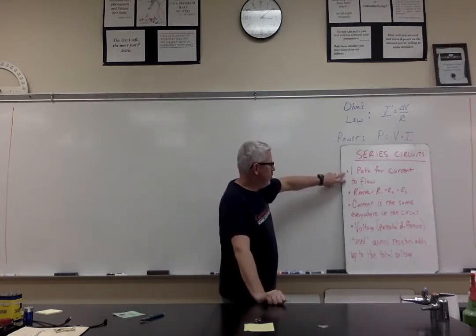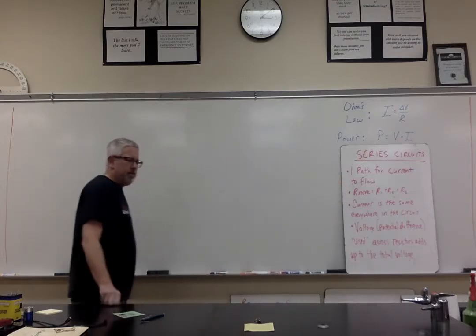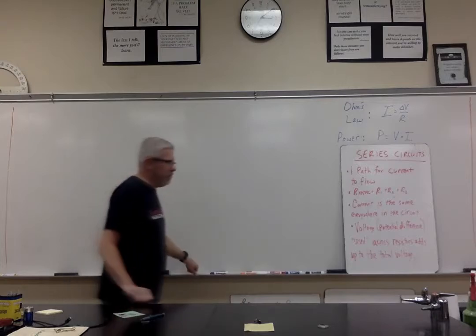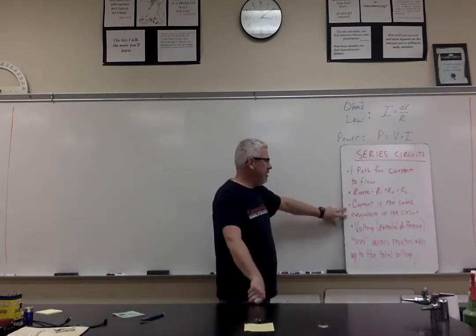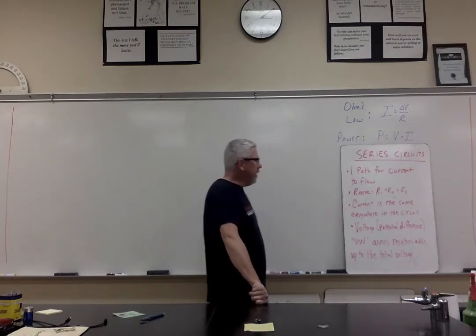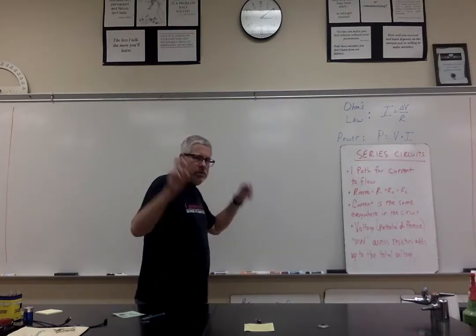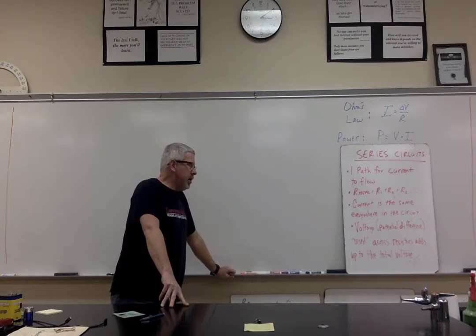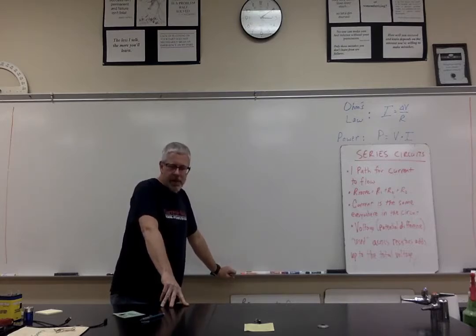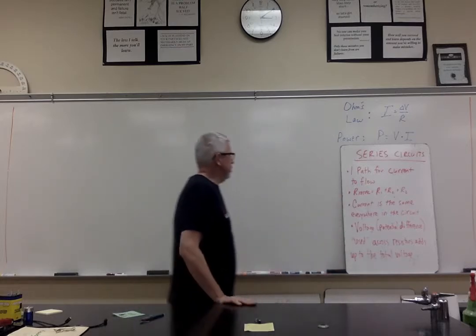In a series circuit, once again, one path for electricity to flow. We're going to find the total resistance of the circuit by simply adding up the resistance values. We're also going to find that current is the same everywhere in the series circuit. And finally, we're going to discover that voltage used across the resistors adds up to the total voltage provided by the battery or power source in the circuit. Those rules apply for any series circuit.